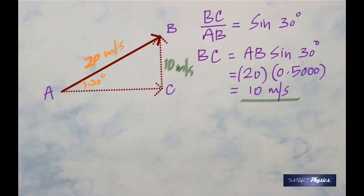Now how do we find AC? Yes, you are right, by taking cos 30 because AC is the adjacent side. Therefore AC by AB is equal to cos 30 degrees, and AC is AB times cos 30. AB is 20, cos 30 is 0.8660. On multiplication you get 17.32 meters per second.